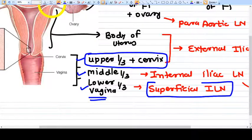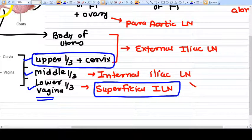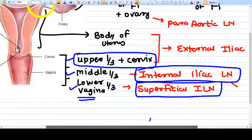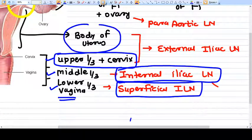The middle one-third drains into the internal iliac lymph node. Remember, middle one-third: internal iliac lymph node. The upper one-third of vagina along with cervix, along with the body of uterus, will drain into external iliac lymph node.